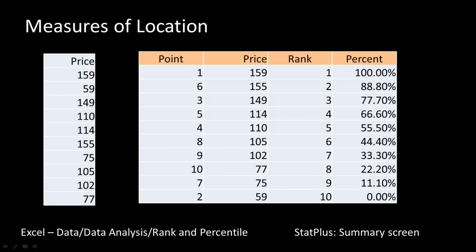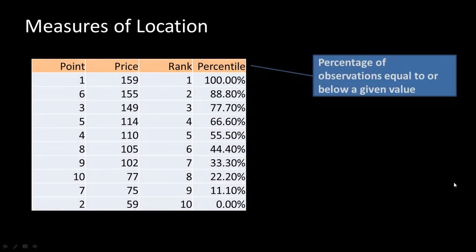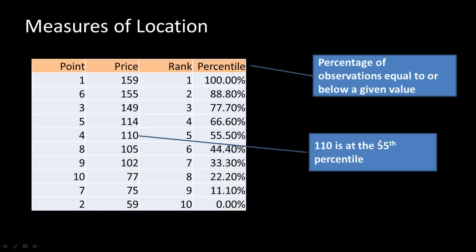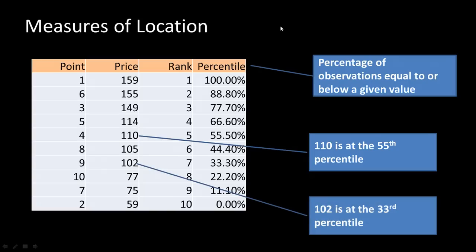The summary screen in StatPlus — if you perform the summary as shown earlier — also gives you an idea of the percentile. It doesn't tell you all the percentiles, but it tells you certain levels we'll talk about shortly. The percentile field is telling you what percentage of observations are equal to or below a given value. For example, 55.5 percent of the values are equal to or less than 110, which means 110 is roughly at the 55th percentile. And 102 is roughly at the 33rd percentile, falling at the middle one-third.